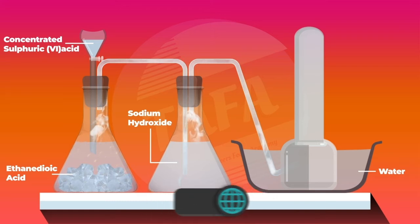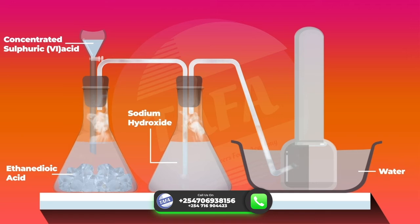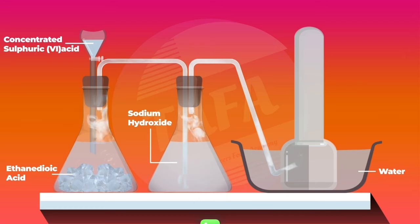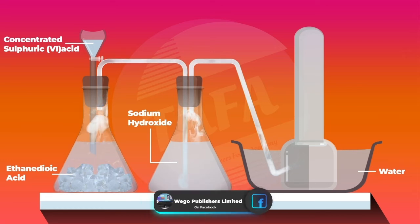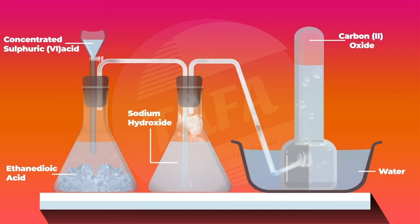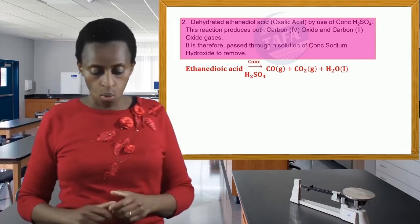Remember, our interest here is the carbon monoxide gas. When the mixture is passed through a solution of concentrated sodium hydroxide, it removes the carbon dioxide gas, and then you're able to collect your carbon monoxide gas over water. The products will be carbon monoxide, carbon dioxide, and water. As you can see in the setup, you still collect it over water.